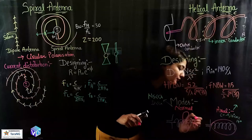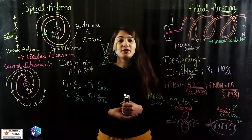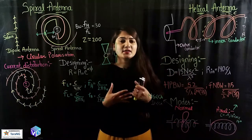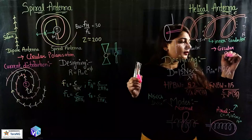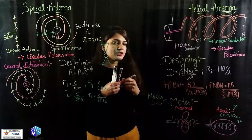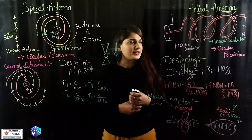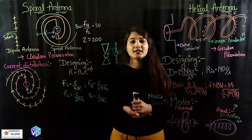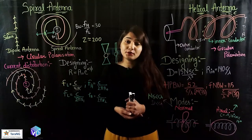In the axial mode, the first condition is C equal to λ, and the second condition is that 13° < α < 14°. In the axial mode the radiation pattern will be end-fire in nature. So again it is used in telemetry applications and it also has circular polarization, due to which it is used in telemetry operation, astronomy applications, and military applications as well.